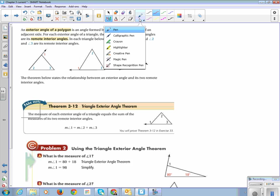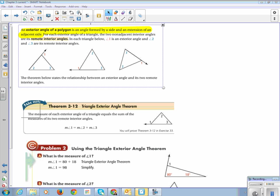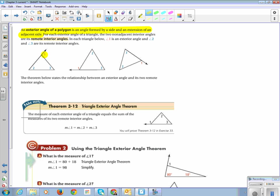All right. An exterior angle of a polygon, make sure you write that down, it's a vocab word, is an angle formed by a side and an extension of an adjacent side. So in our figure, angle 1 is the exterior angle in each of our diagrams. So he's right next to the triangle, but on the outside. And he belongs to a line that extends off a side of the triangle.